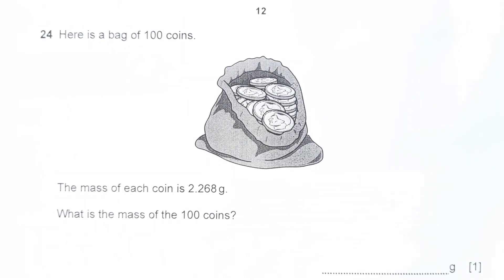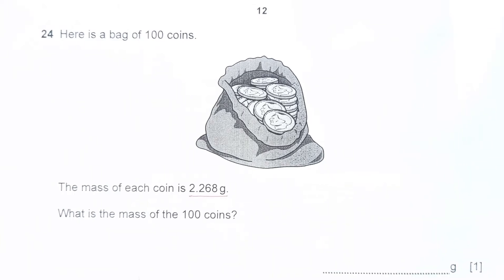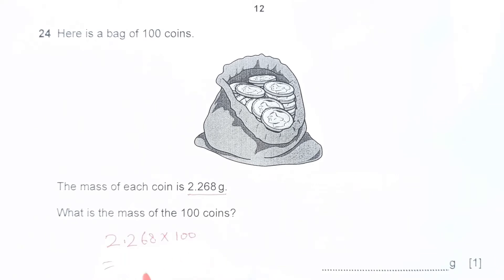Question 24. Here is a bag of 100 coins. The mass of each coin is 2.268 grams. What is the mass of 100 coins? Each coin is 2.268 grams, we are looking for the mass of 100 coins. That means we are just going to multiply by 100: 2.268 times 100. Whenever you multiply by 100, don't do actual multiplication. Move 3 decimal places. Start counting from right hand side: 1, 2, 3 decimal places. Final answer is 226.8 grams.